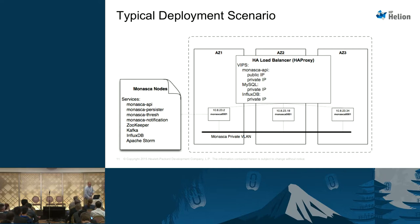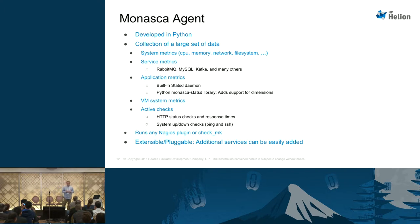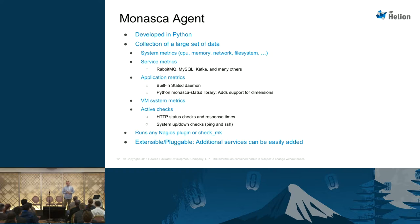Our agent is a Python agent — it's optional, but typically you'd use it with Monasca. It collects large amounts of data like system metrics, service metrics, or application metrics. We have a built-in StatsD daemon, so if you import a StatsD library and instrument your application, you can send application metrics that way. We support VM metrics via Libvirt. We do active checks as well — HTTP status checks, system up/down checks. We can run any Nagios plugin or Check_MK, and it's very extensible.